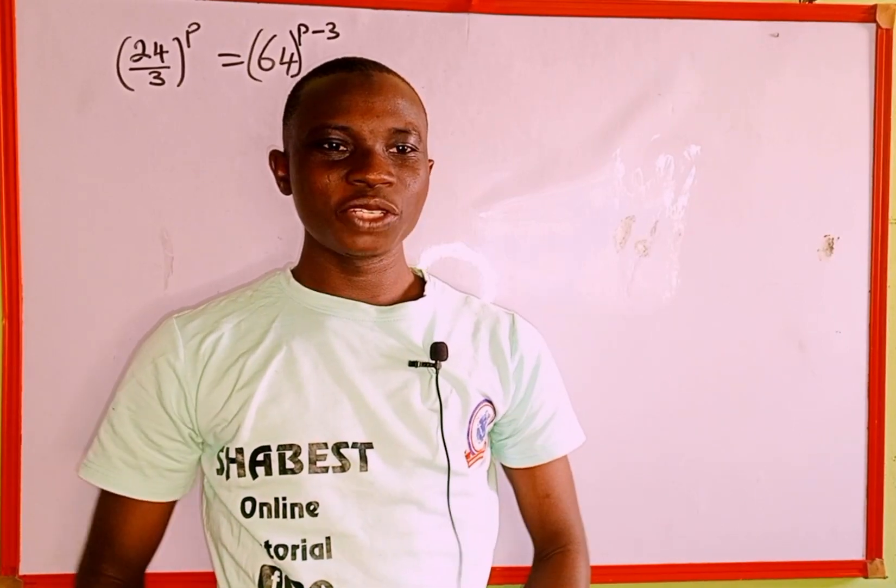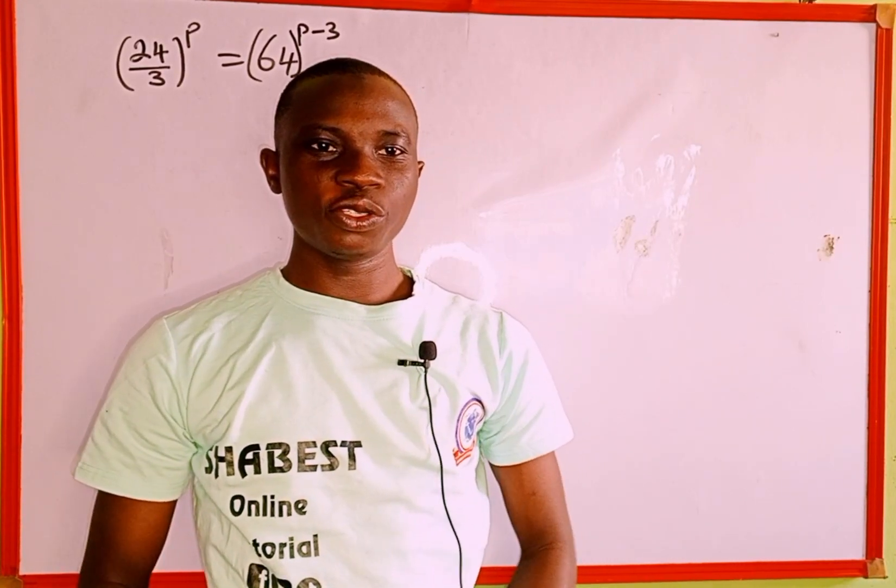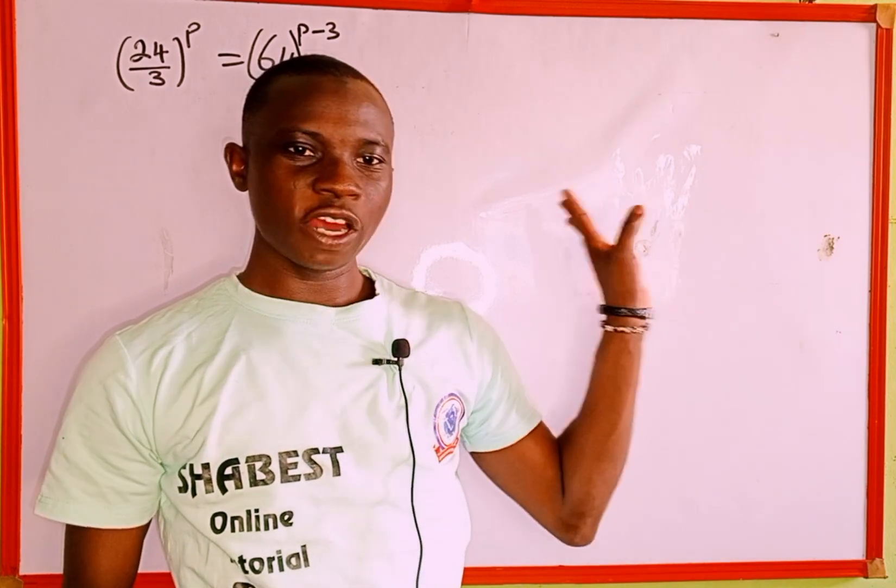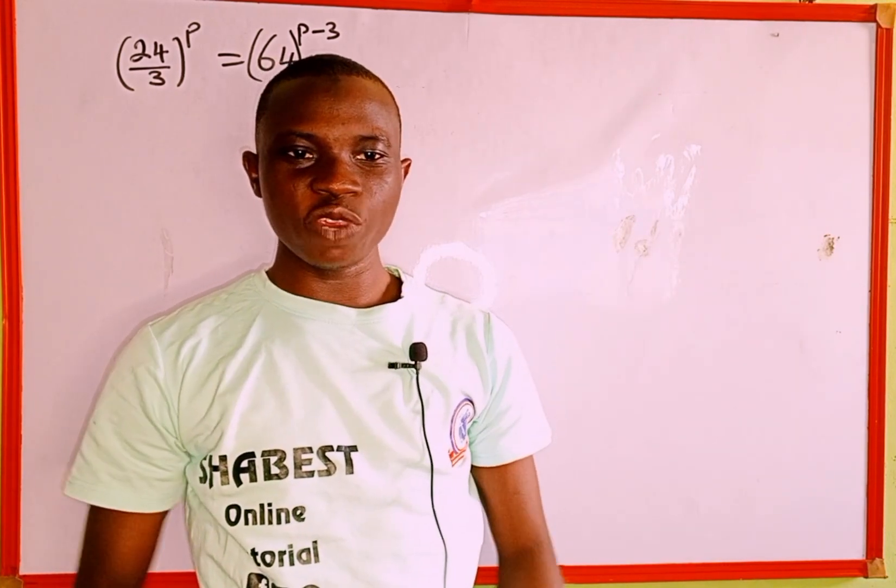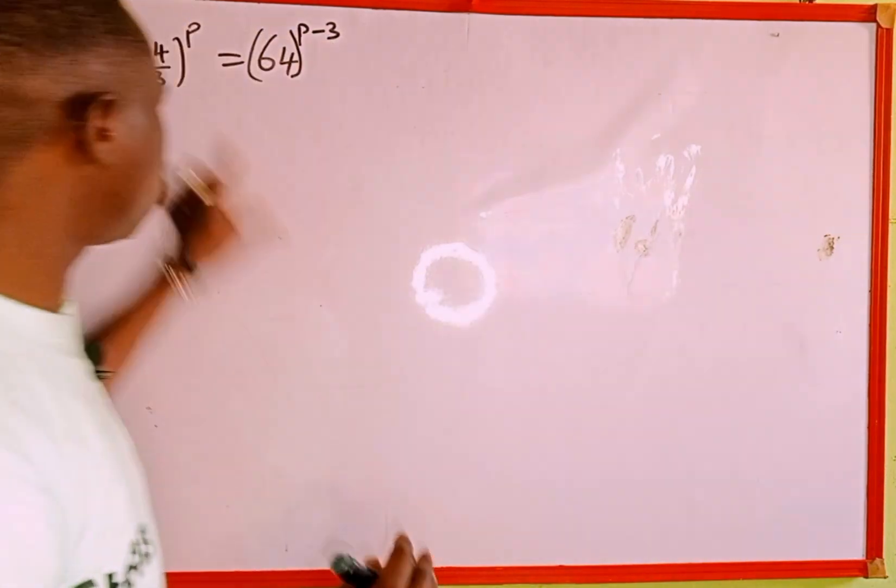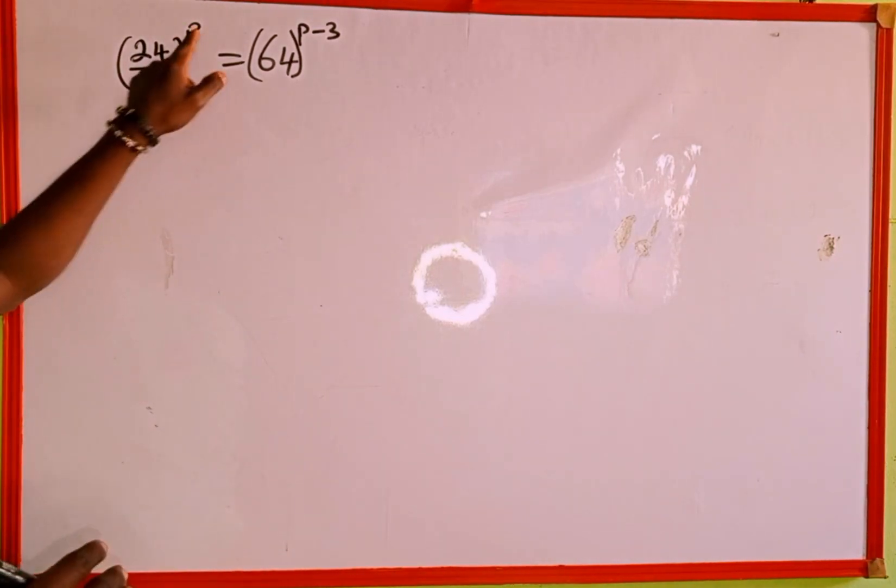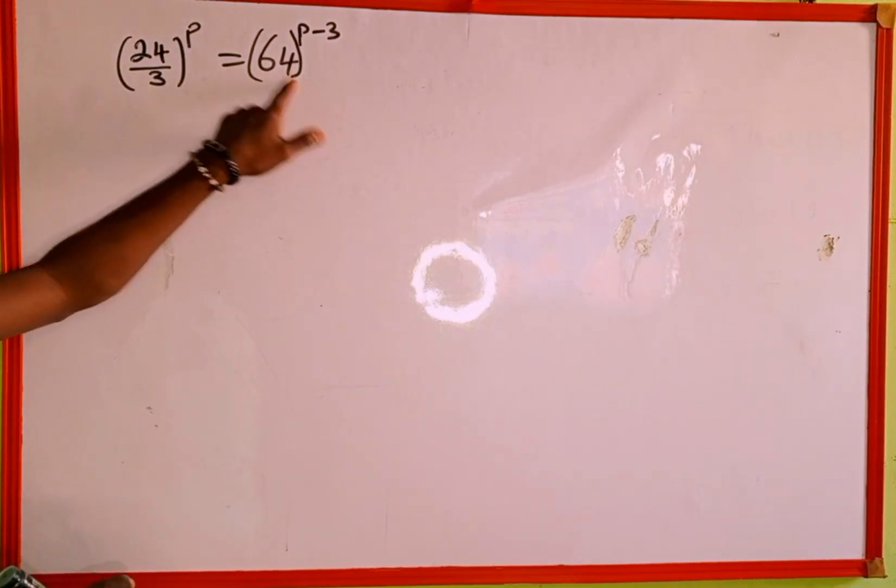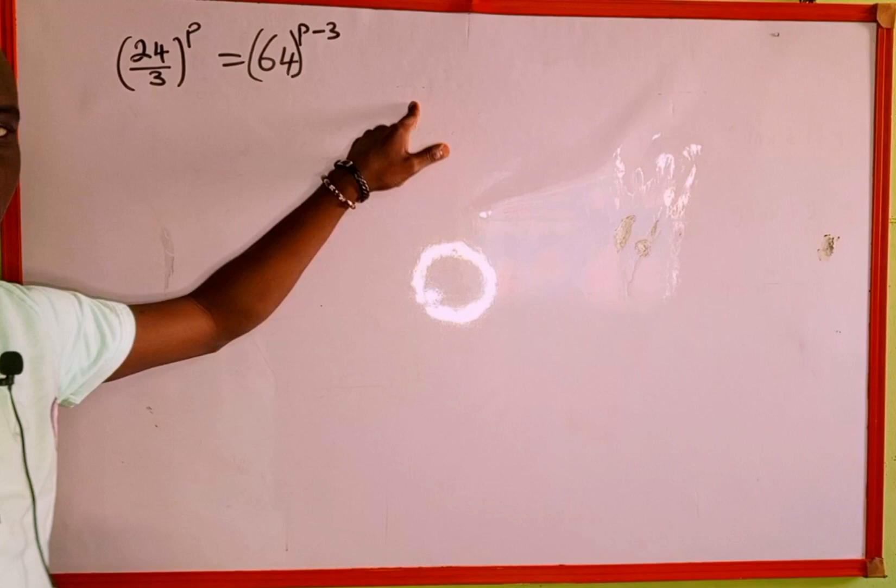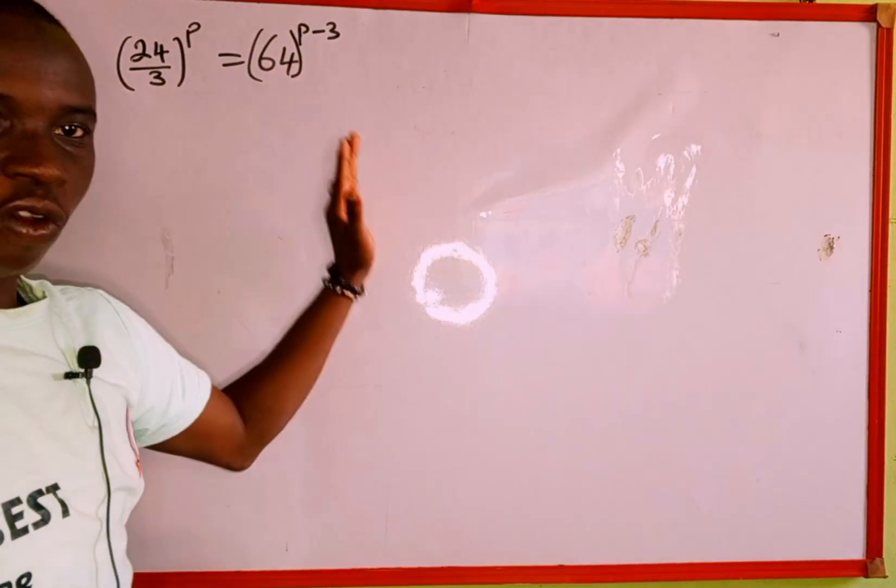Hello everyone, welcome back to Shabez online tutorial. In today's tutorial we're going to learn how to solve for the value of p in this exponential equation. The given equation is 24 over 3 raised to the power of p equals 64 to the power of p minus 3, and we're asked to solve for the value of p.